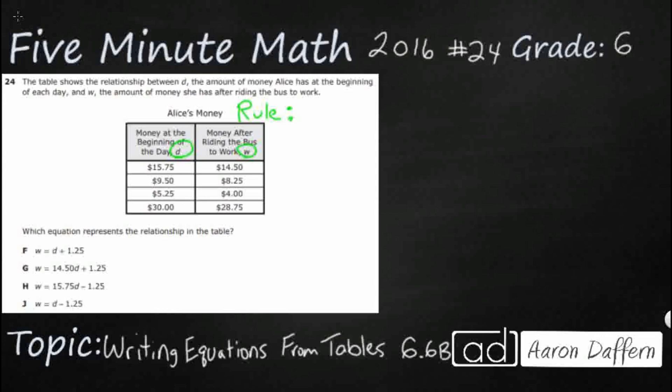So how are we getting, since our numbers are in two different columns here, let's go ahead and look from left to right. So when we are going from $15.75 down to $14.50, it looks like we are getting smaller. All of these happen to be getting smaller for us.